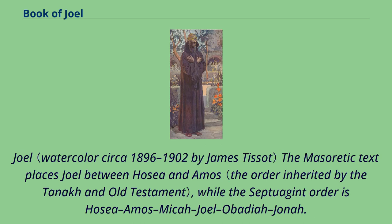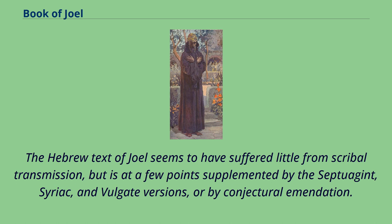The Masoretic Text places Joel between Hosea and Amos, while the Septuagint order is Hosea, Amos, Micah, Joel, Obadiah, Jonah. The Hebrew text of Joel seems to have suffered little from scribal transmission, but is at a few points supplemented by the Septuagint, Syriac, and Vulgate versions, or by conjectural emendation.